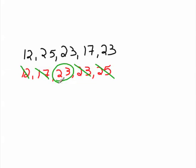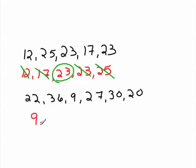If, however, I had a different data set, like this data set, and again I would have to arrange the numbers in numerical order first, and in numerical order, the numbers would be 9, 20, 22, 27, 30, and 36.